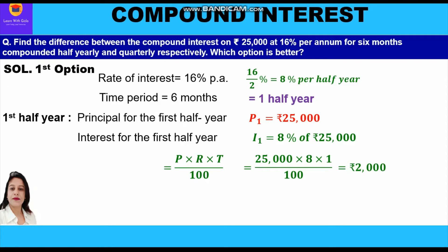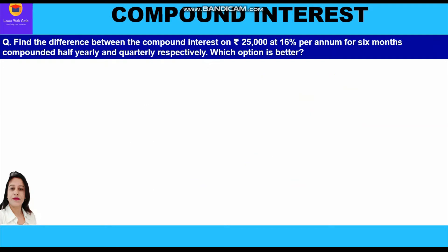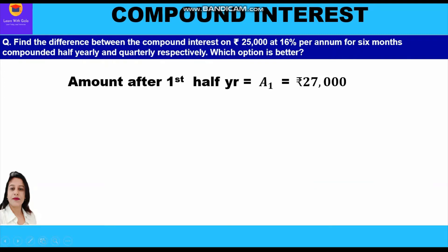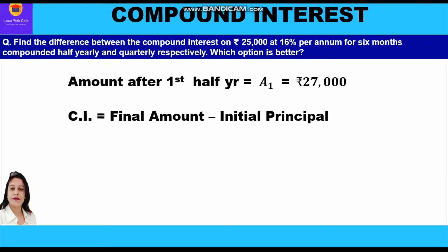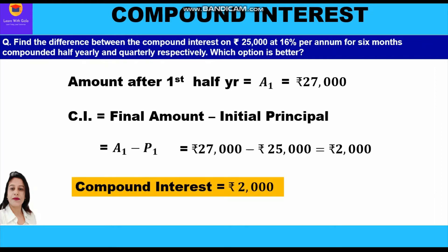We apply the formula of simple interest: PRT upon 100, which is 25,000 × 8 × 1 ÷ 100, giving Rs 2,000 as interest for the first half year. Amount at the end of first half year is 25,000 + 2,000 = Rs 27,000. Compound interest is the difference between final amount and initial principal: 27,000 − 25,000 = Rs 2,000. So in option one, compounded half yearly, CI = Rs 2,000.